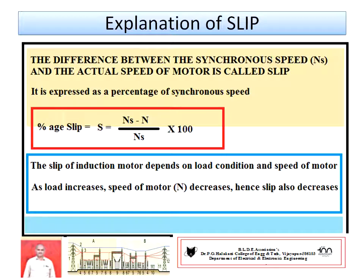Slip may be expressed as a percentage or as a fractional value. The fractional value of slip is always less than 1. Two points to remember: the slip of an induction motor depends upon load condition and speed of the motor. As the load increases, the speed of the motor decreases, and correspondingly the slip increases.